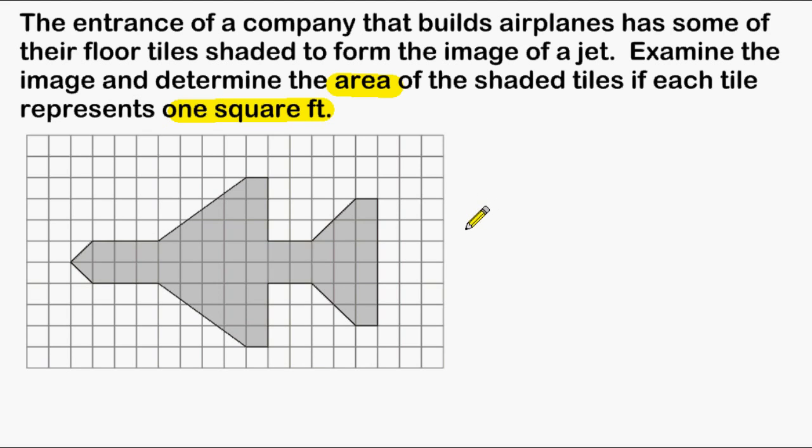If we examine the shaded tiles, we can see that there is no single shape here that we can just find the area of. We have to break this image into multiple shapes and figure out the area of each of those shapes and then add those areas together.